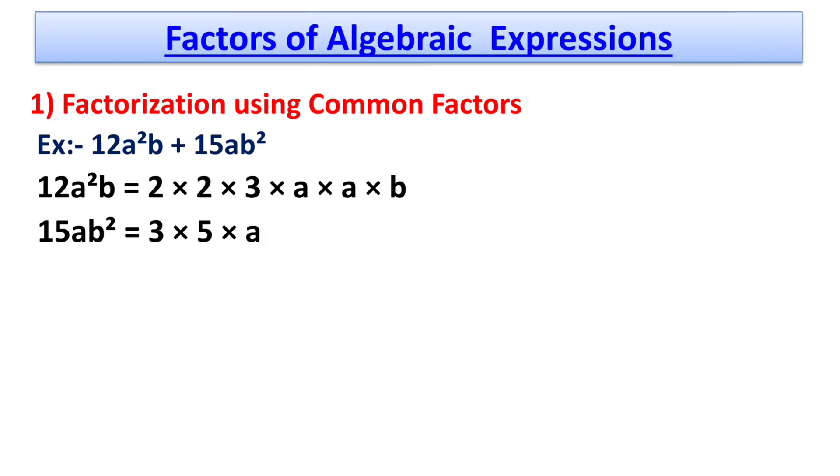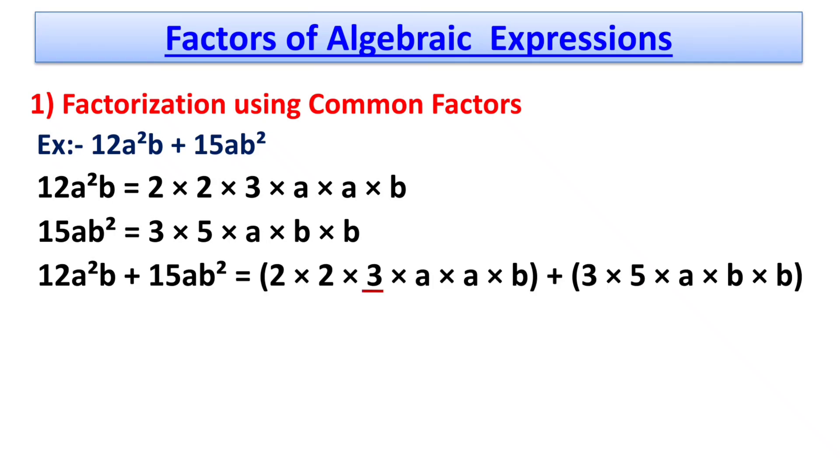Similarly, 15ab² = 3 × 5 × a × b × b. These are the factors of 12a²b and 15ab². Now, out of these factors, 3, a, and b are common.